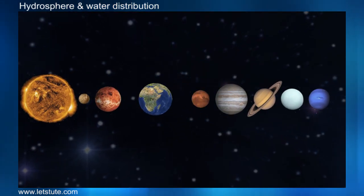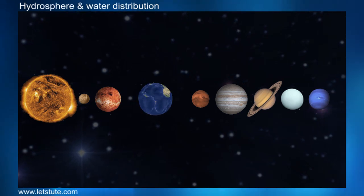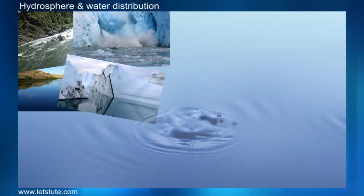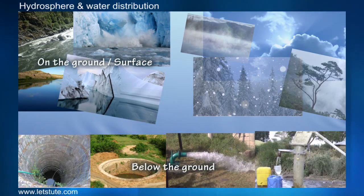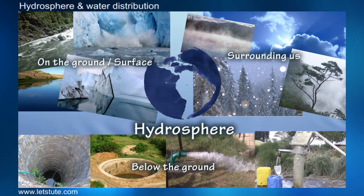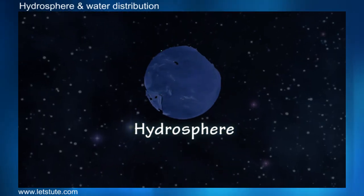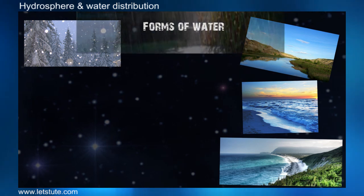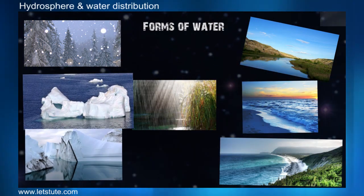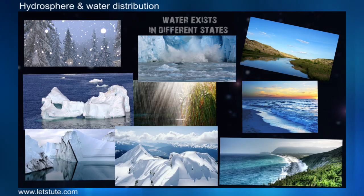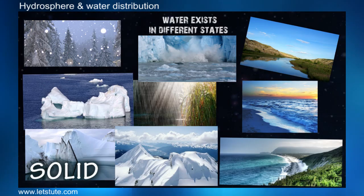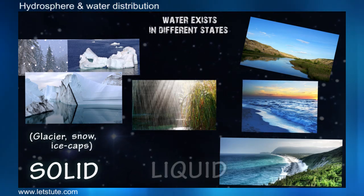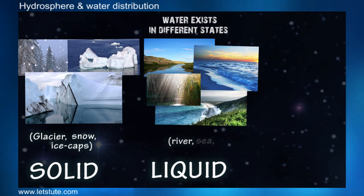Let's know some more things about this interesting feature of our Earth — that is, our hydrosphere. All the water on the surface, below the ground, and surrounding the Earth comes under the hydrosphere. We can see water in different forms like rivers, seas, oceans, snow, rain, glaciers, and ice caps. Water is present in solid form in glaciers, snow, and ice caps, whereas it exists in liquid form in rivers, seas, and oceans.